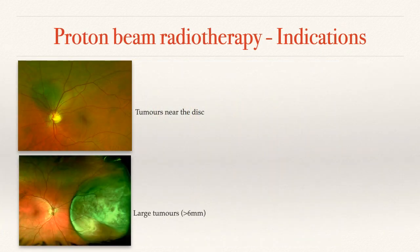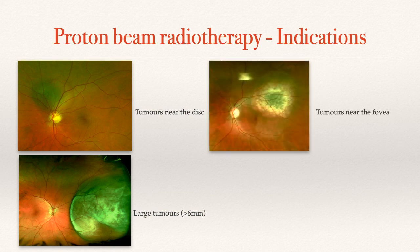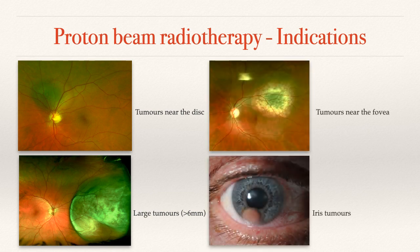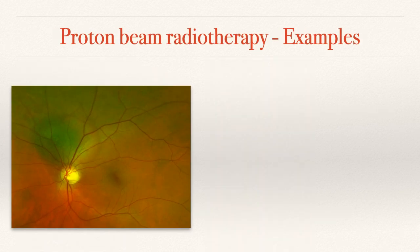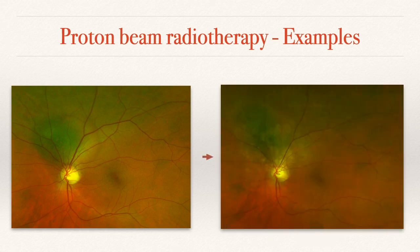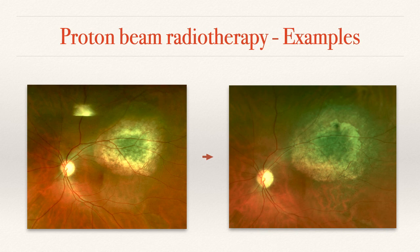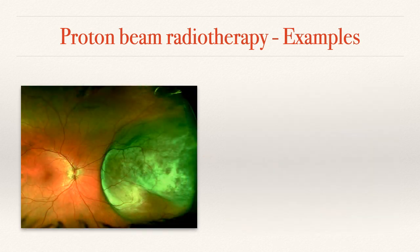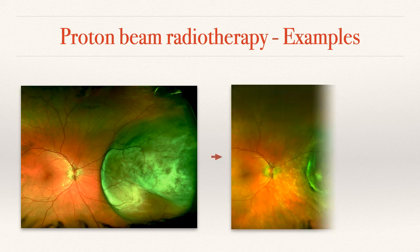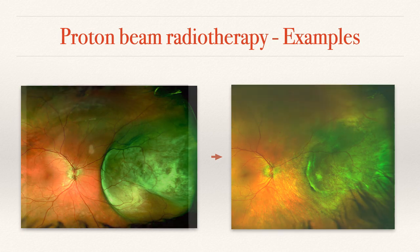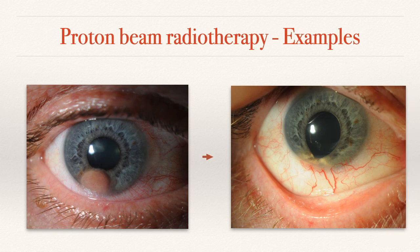Because of this, we treat certain tumour types with proton beam: tumours near the nerve, tumours near the macula, larger tumours, and iris tumours due to its localising precision. Examples of tumours near the nerve show the tumour getting a lot smaller with proton beam. Tumours near the macula preserve more vision than with plaque brachytherapy. Larger tumours that previously would have had primary enucleation now undergo proton beam with very good effects, and iris tumours respond extremely well with very minimal side effects.